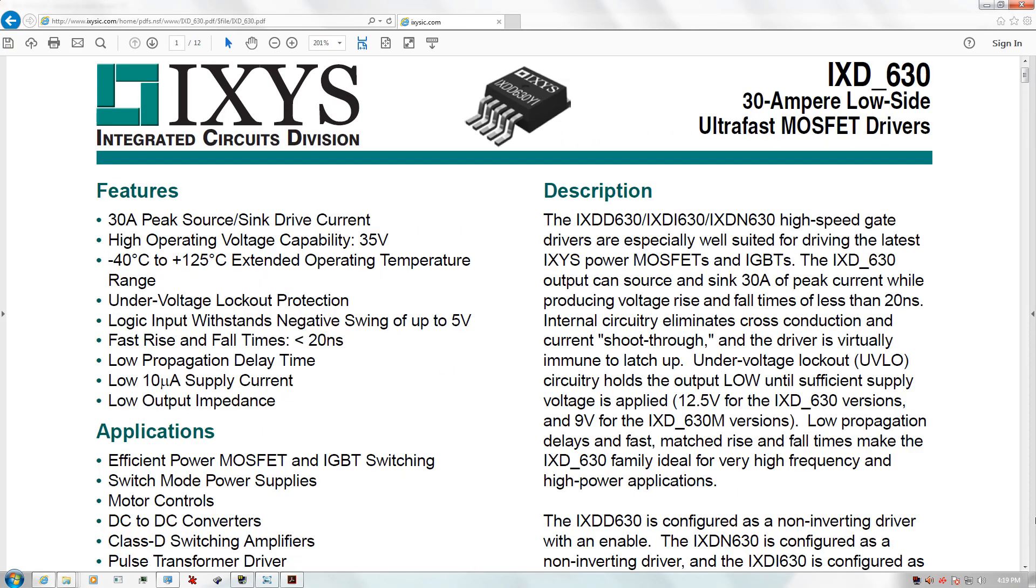So before I show you how to wire anything, I want to introduce you to the iXDN630. Now as you can read here, it can source and sync up to 30 amps, while the HCPL3120 can only do 2.5 amps peak, sync and source. So this gate driver is a lot more powerful and it will allow us to drive the IGBTs with the higher current and voltage ratings.